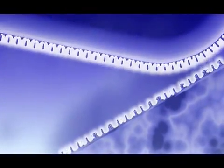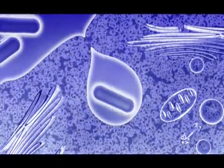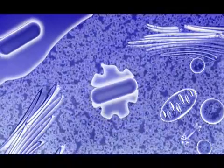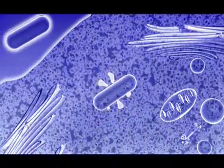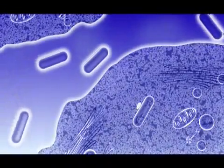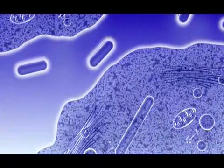Listeria synthesizes Listeriolysin O and phospholipases. LLO, a pore-forming toxin, is targeted to the vacuolar membrane and perforates it. PLC aids vacuolar membrane disintegration. The vacuolar membrane has disintegrated, so Listeria are released into the cytoplasm and multiply. LLO is targeted for breakdown by several mechanisms that have not been fully elucidated.